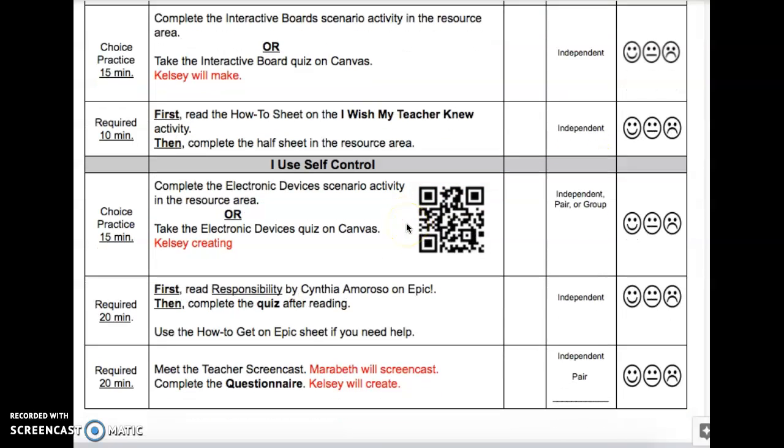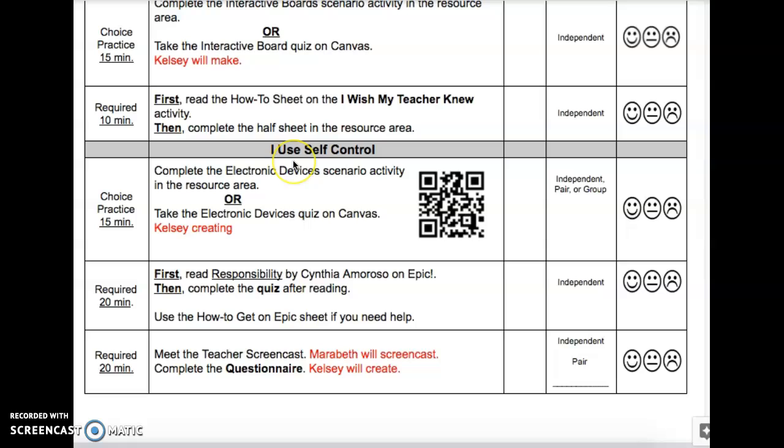The next section of the activity list for week one is I Use Self-Control. These sections are based off of our great student rubric. So we're practicing those parts. So we have the choice practice. It's 15 minutes. You have two options. Complete the electronic devices scenario activity in the resource area.